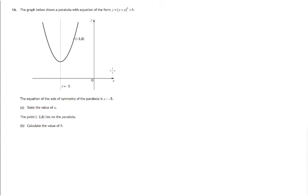So here we have the graph of a parabola. We're told various bits of information: that its axis of symmetry is at x equals negative 5 and that the point negative 3, 8 lies on the parabola. We're also told the form of the equation of the parabola: y equals x plus a all-squared plus b.